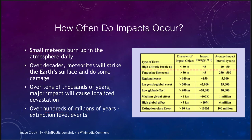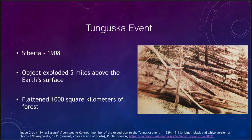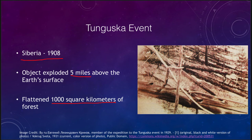One well-known impact is the Tunguska event that occurred in Siberia in 1908. In that case the object exploded high in the atmosphere — five miles above the Earth's surface — and flattened an area of 1,000 square kilometers of forest. We can see images of all these trees lying down, radiating away from the central point of the explosion. There have been more recent, smaller ones as well, including one in Russia a few years ago, though not nearly as large as Tunguska. If a Tunguska-level event were to occur over a major city it would devastate it.